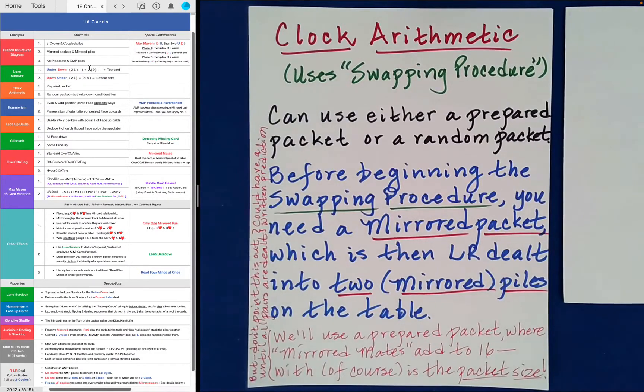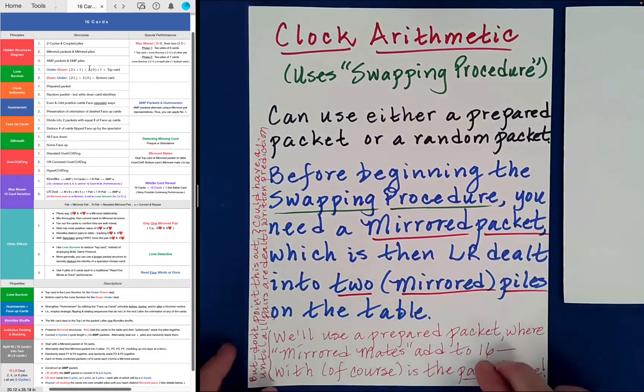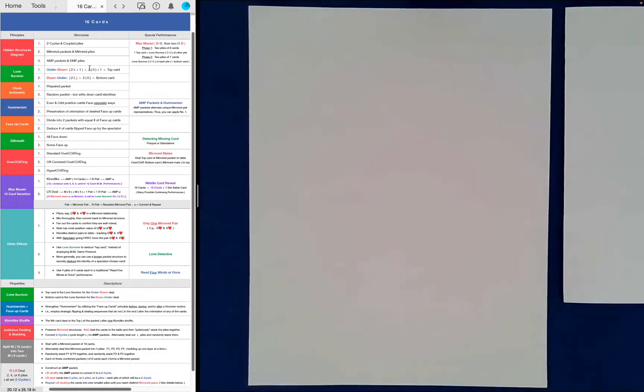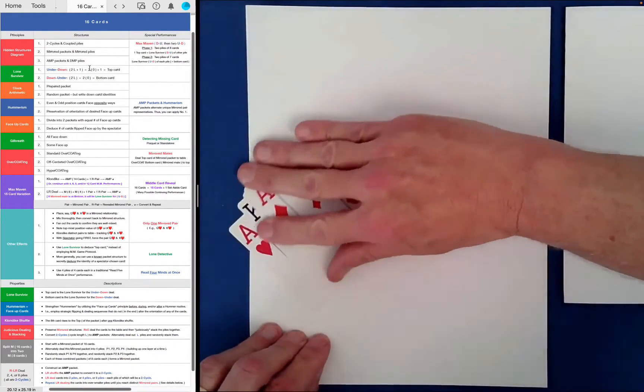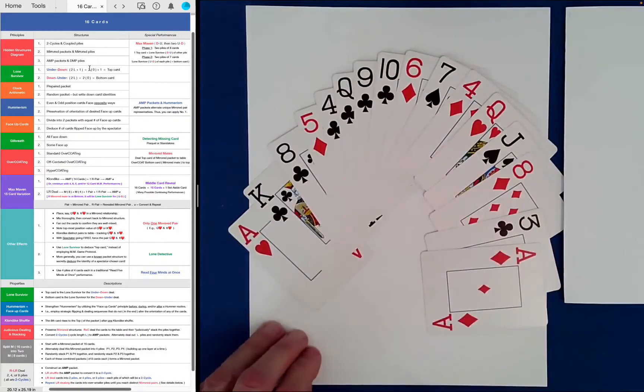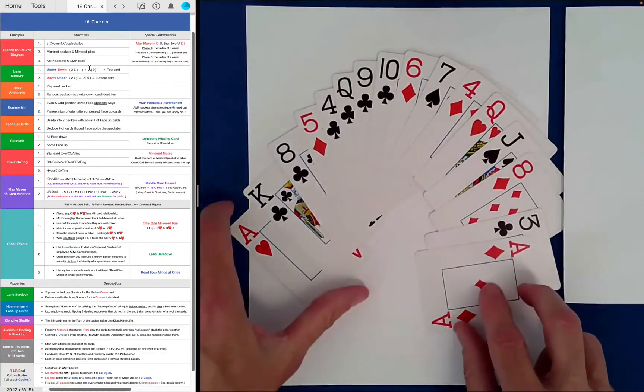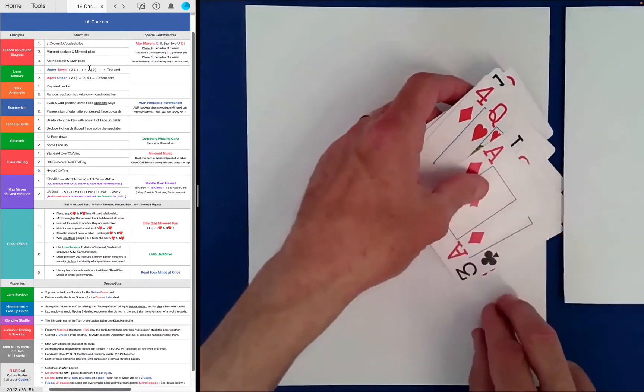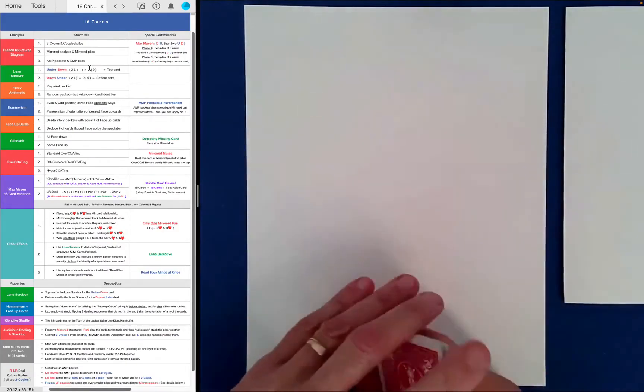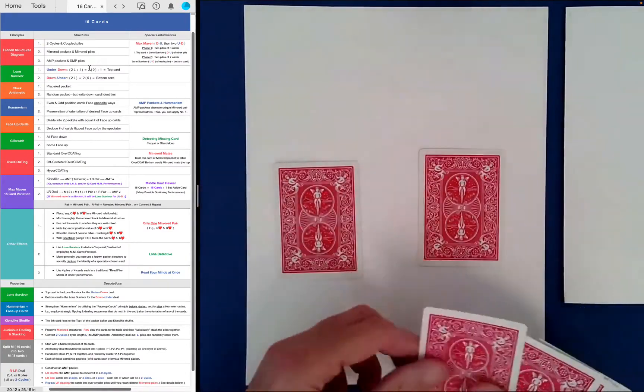Okay, this next effect is called the Clock Arithmetic Routine, and it involves this swapping procedure that we saw earlier in the series. So let me go ahead and demonstrate it, and then we'll talk about how I accomplished what I did.